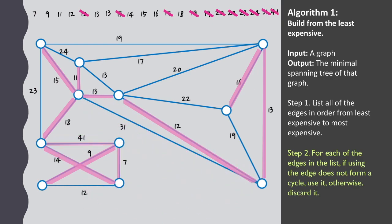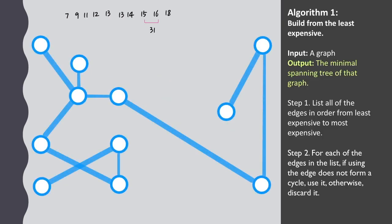Once we've considered the final edge, we have our minimum spanning tree. This is not necessarily unique—we could swap the 13 edges in the middle—but it should achieve the minimum cost possible. In this case, the total cost is 128.